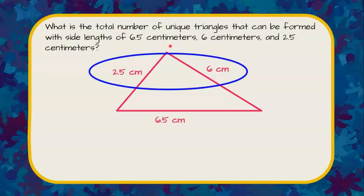So we have to do three inequalities. We have to say that 2.5 plus 6 is going to be greater than the missing side, the 6.5. So these two sides must be greater when added together than the third side. 2.5 plus 6 is 8.5 and 8.5 is greater than 6.5. So it checks.